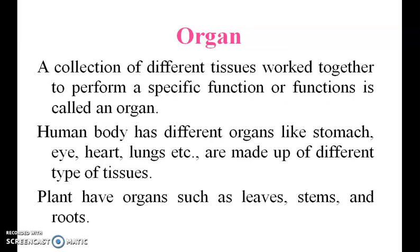Tissues that work together to perform a specific function are called an organ. The human body has different organs like the stomach, eye, heart, and lungs. Plants have organs such as leaves, stems, and roots.